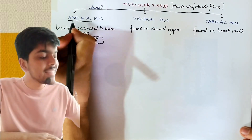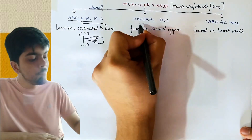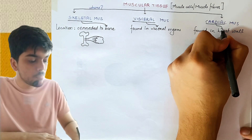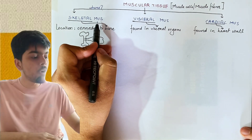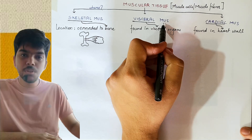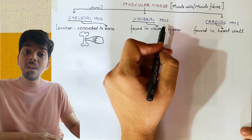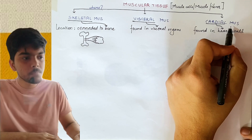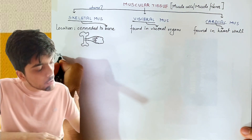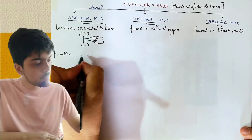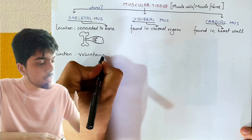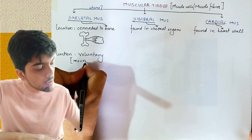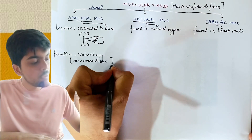So skeletal muscle is that muscular tissue found connected to your bone; visceral muscle is found in your visceral or internal organs; and cardiac muscle is found in the wall of your heart. Now, for function: skeletal muscle is voluntary, meaning it is under your control, and that's exactly why movement and locomotion is possible with the help of skeletal muscle.